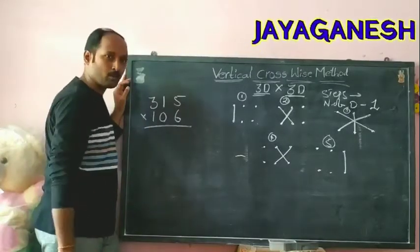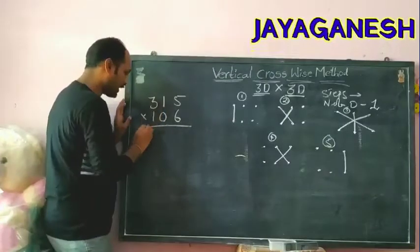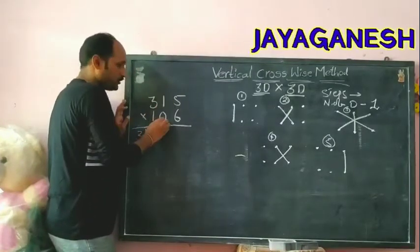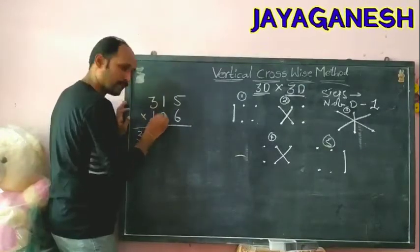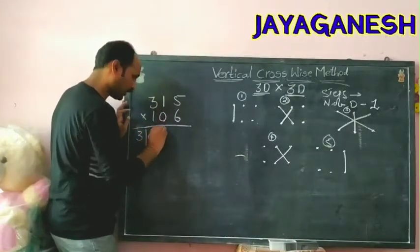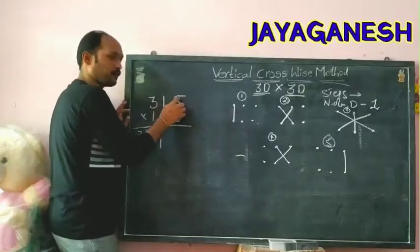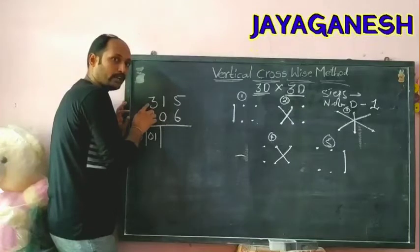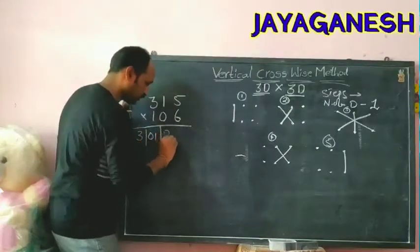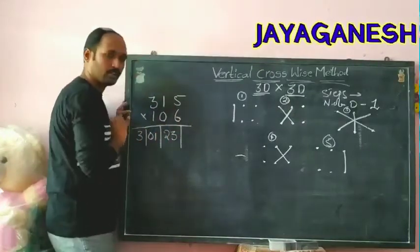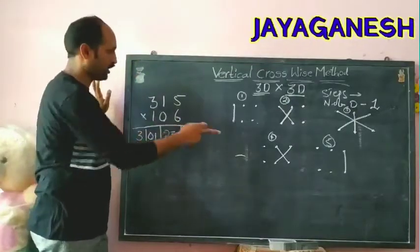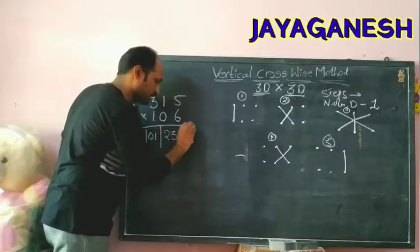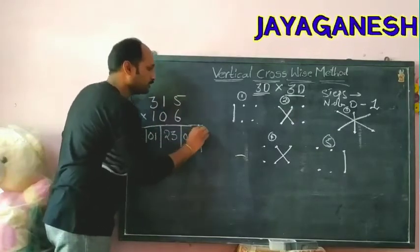Now one more example. Step 1: 1 × 3 = 3. Step 2: (1 × 1) + (0 × 3) = 1 + 0 = 1. Step 3: (1 × 5) + (6 × 3) + (1 × 0) = 5 + 18 + 0 = 23. Step 4 (middle): (6 × 1) + (6 × 0) + (0 × 5) = 6 + 0 + 0 = 6. Step 5: 6 × 5 = 30.